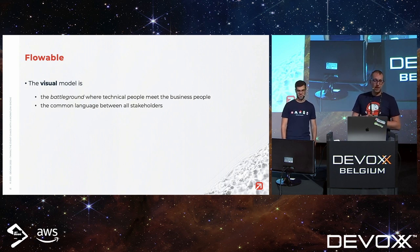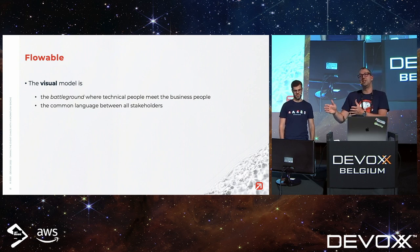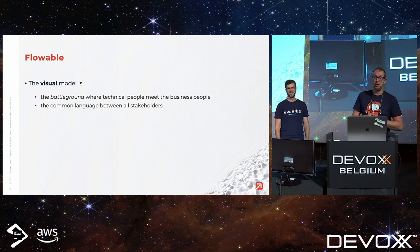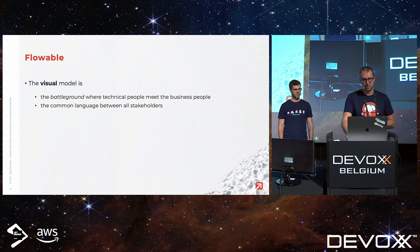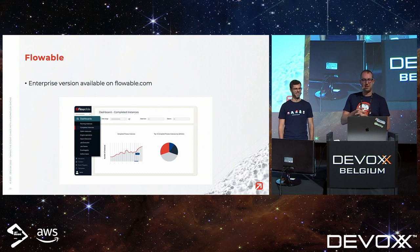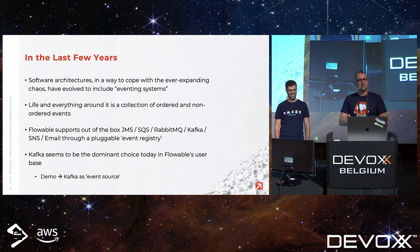This visual model is the battleground where tech people meet business people. It's not the perfect language for either side, but it's a common ground — a compromise in the Belgian sense — where you can find each other and talk about the same thing without writing everything down. We also have an enterprise version at flowable.com — that's the slide done.